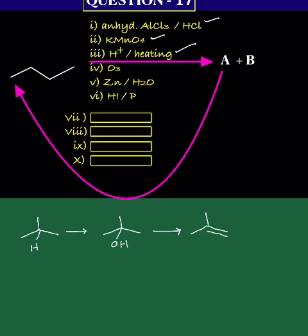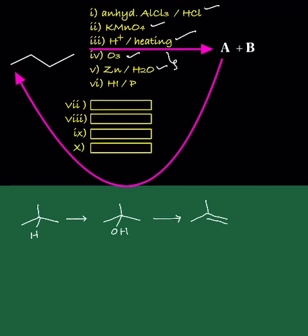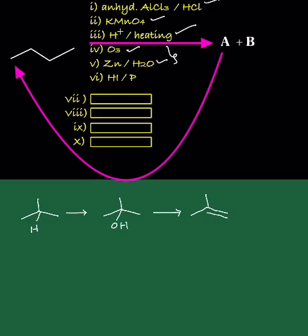will get isobutylene. The fourth and fifth reagents cause reductive ozonolysis. You need to break the C=C double bond, and wherever the double bond is broken, you add oxygen.